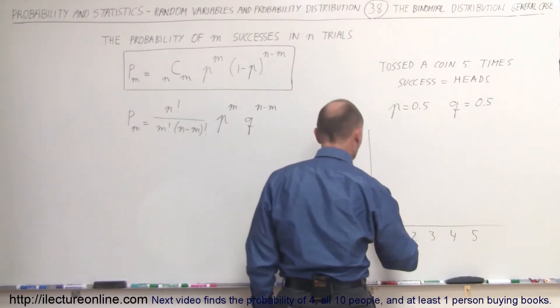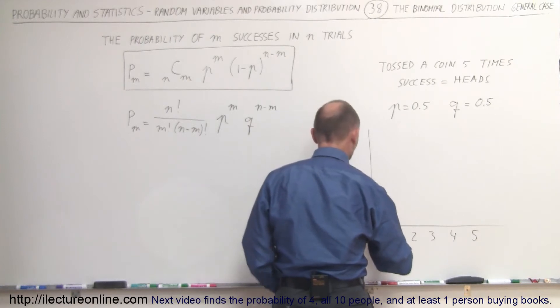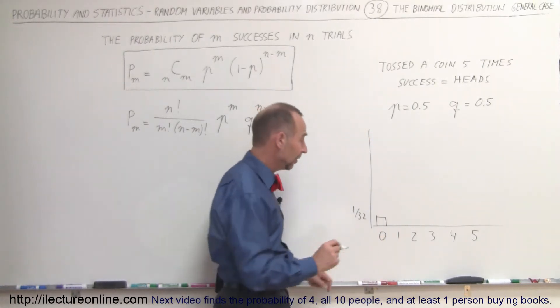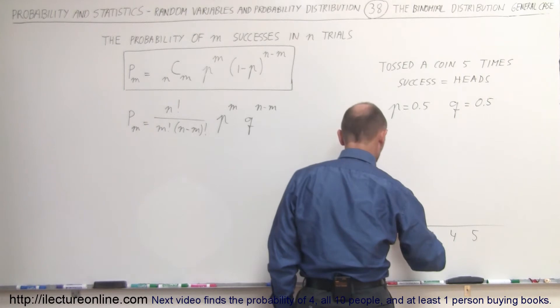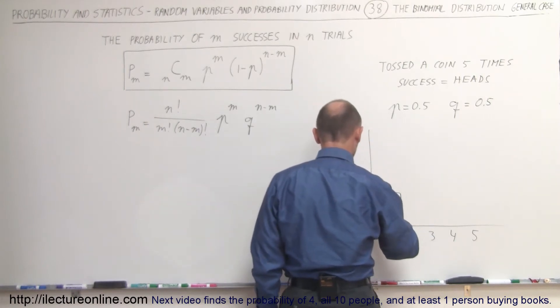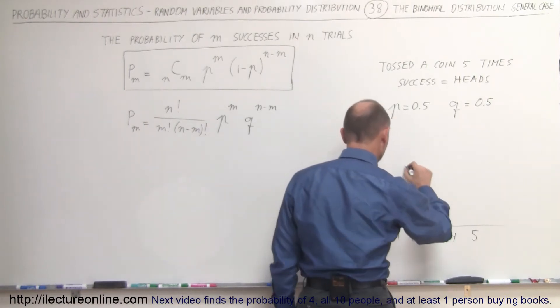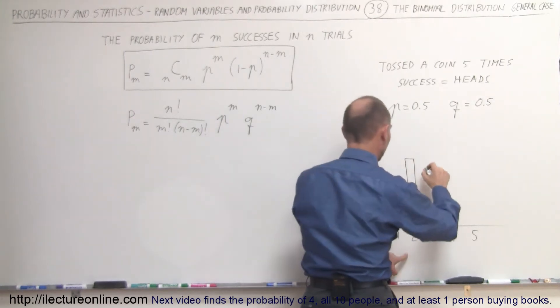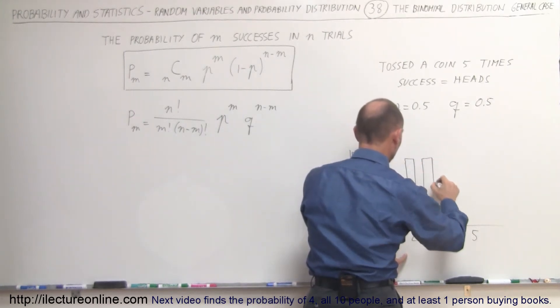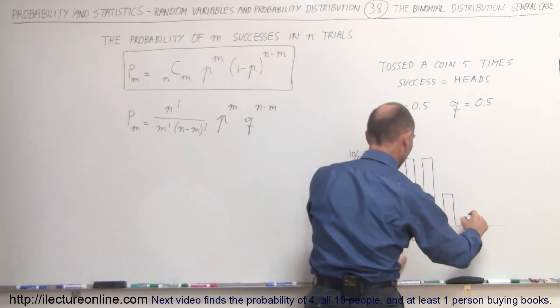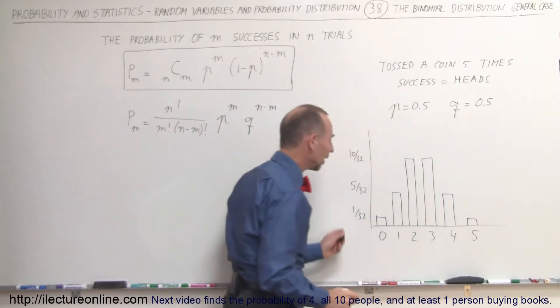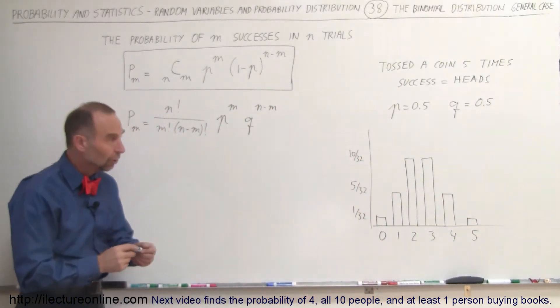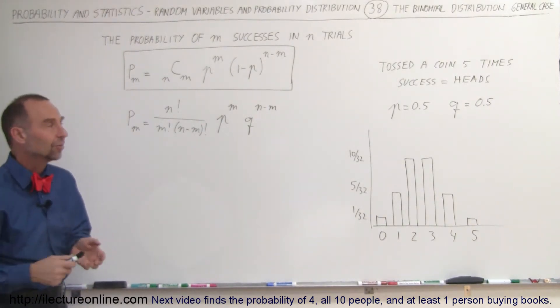The distribution showed that there was one out of 32 chances to get zero heads, five out of 32 chances to get one head, ten out of 32 chances to get two heads, ten to get three heads, five to get four heads, and one to get five heads. That was our binomial distribution for tossing a coin five times with success being heads, probability 0.5.